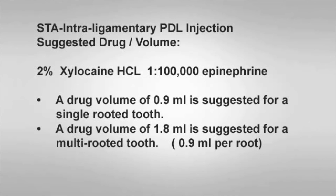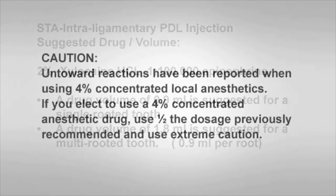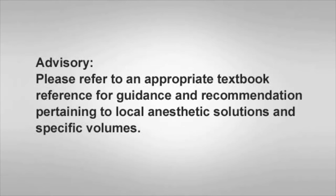A drug volume of 1/2 cartridge or 0.9 milliliter is suggested for a single-rooted tooth. For a multi-rooted tooth, 1/2 cartridge or 0.9 milliliter anesthetic for each of the mesial and distal roots may be administered, for a total of 1.8 milliliters. If you would like to use a 4% concentrated local anesthetic drug, such as 4% articaine HCL, use half the dosage previously suggested and use caution when using these medications. Please refer to an appropriate textbook reference source for guidance and recommendations pertaining to local anesthetic solutions and specific volumes.